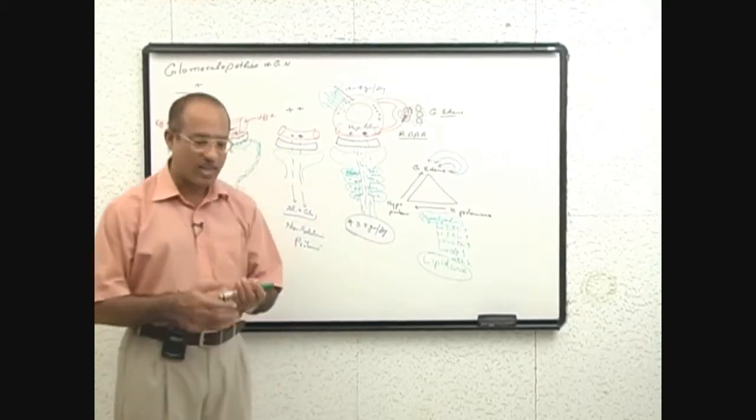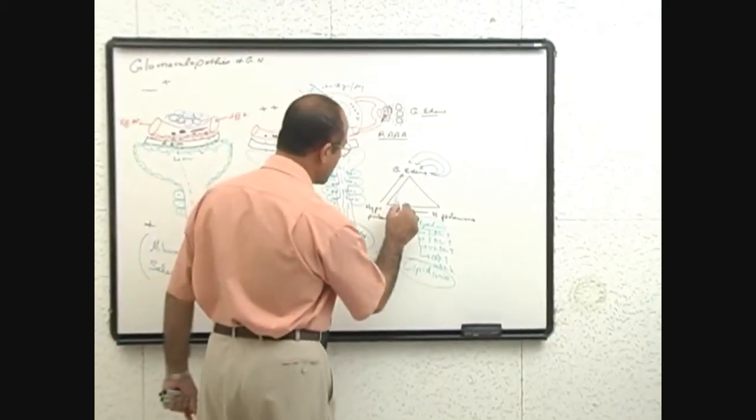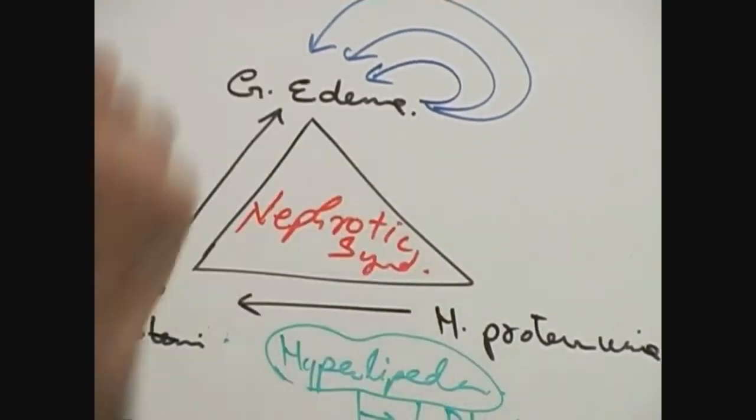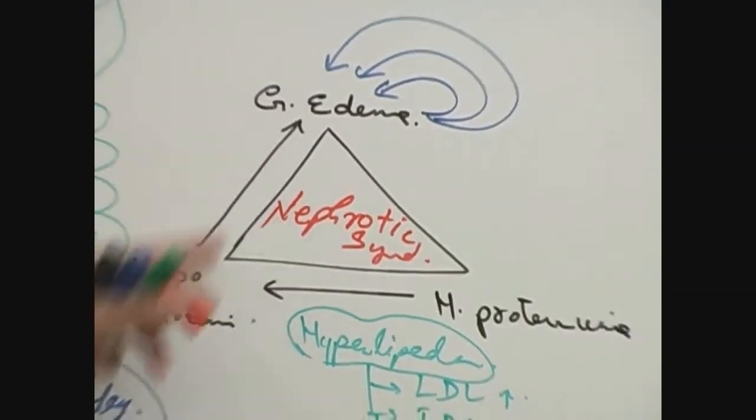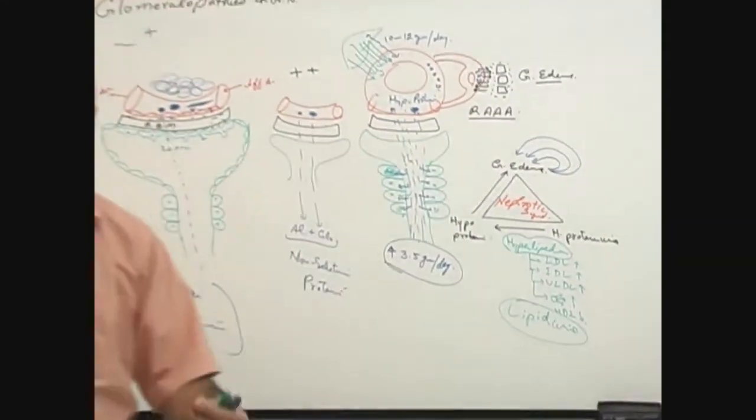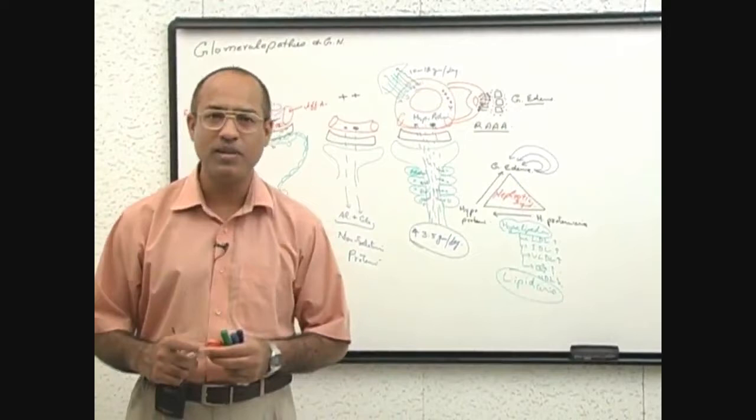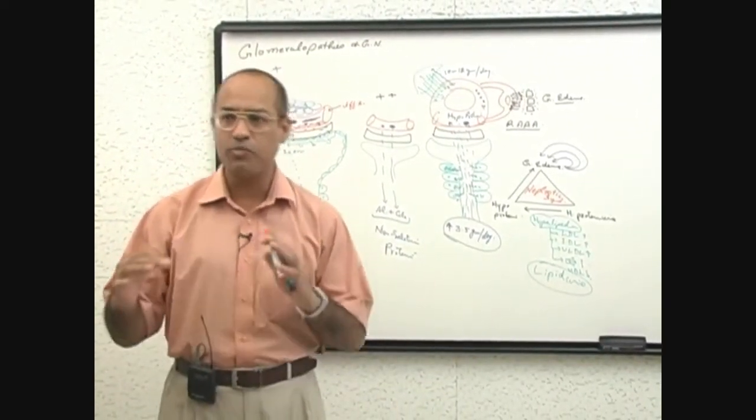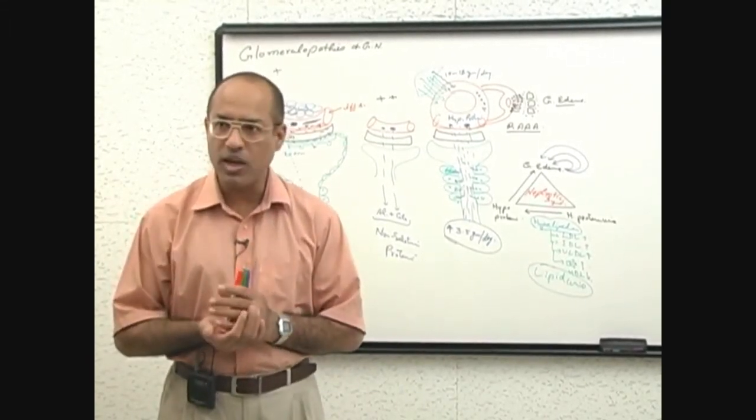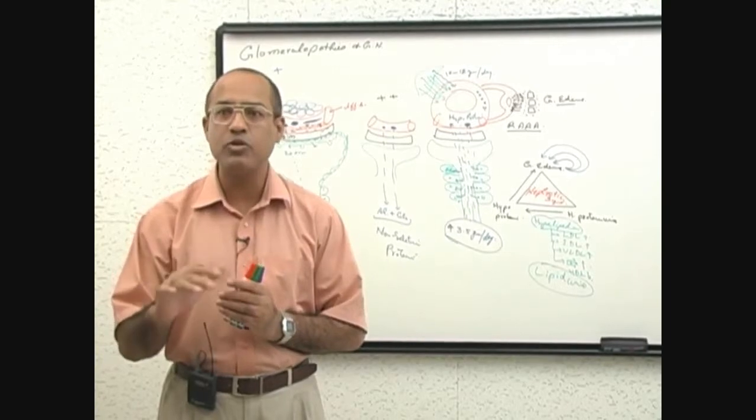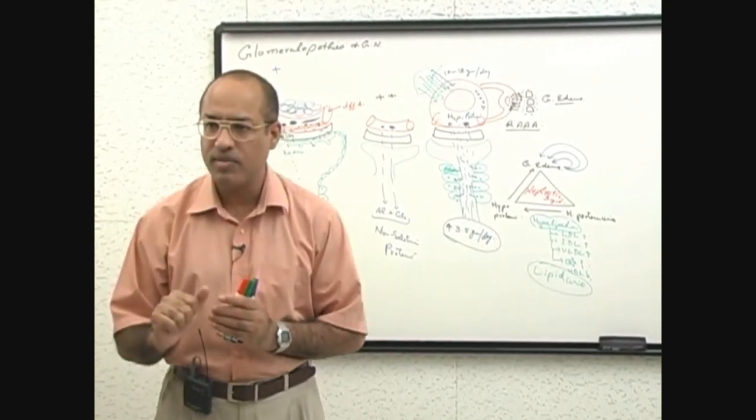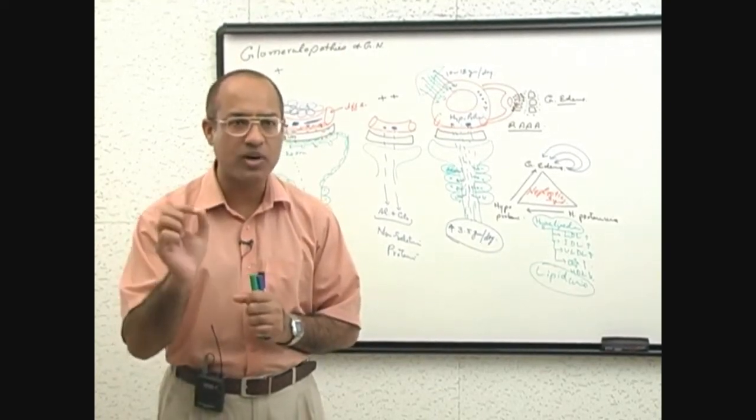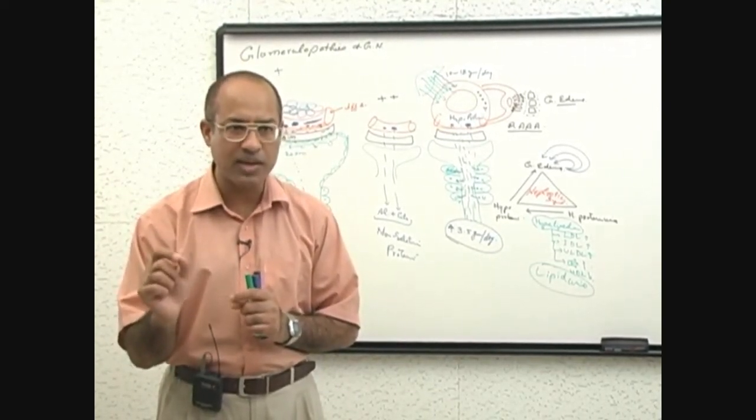Whole this picture is called nephrotic syndrome. All this thing which happened to patient number 3 is nephrotic syndrome. So how do you define nephrotic syndrome? Nephrotic syndrome is a clinical pathological condition which develops when there is significant damage to the glomeruli leading to heavy proteinuria. Heavy proteinuria cut off point is in adult 3.5 grams per day.